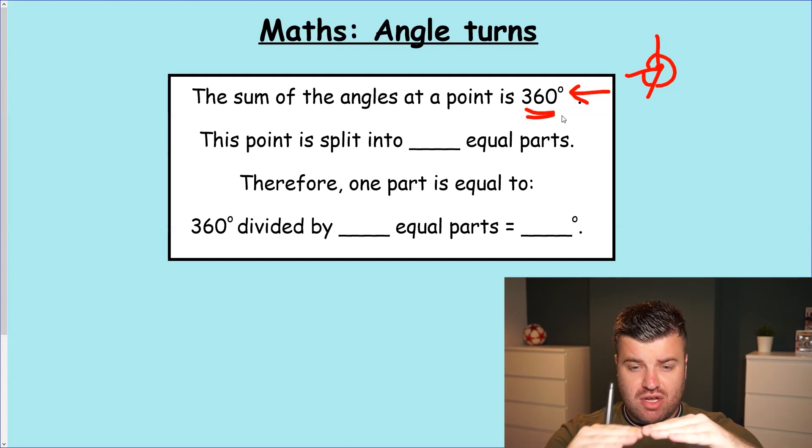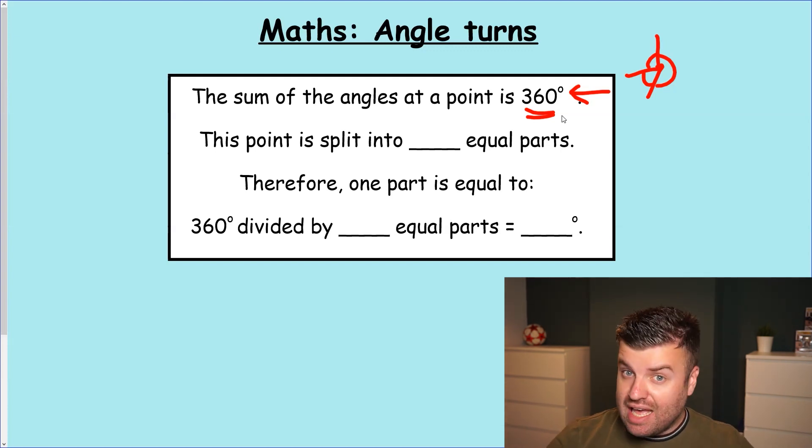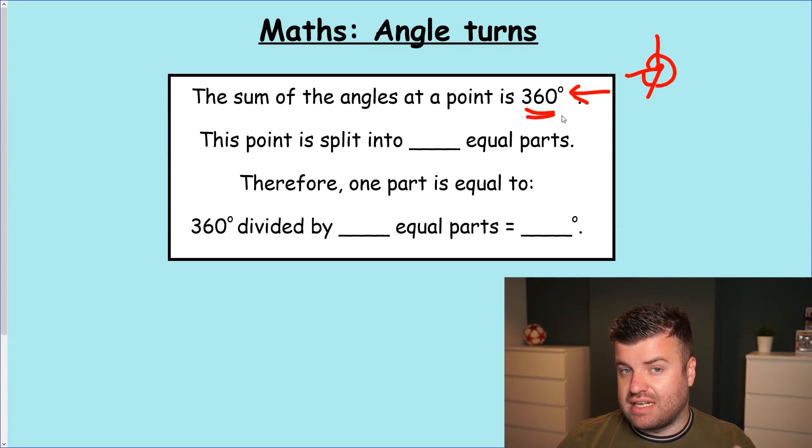For other questions, you might need to know that angles on a straight line are 180 and obviously that right angle is 90. We have to know these facts, else we cannot solve these questions. At the moment, the rest of this box might be looking a bit odd. The point is split into some equal parts. Well, we'll come on to that now as we move on to the first question.